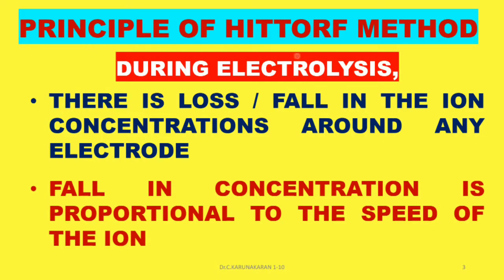We will now study the principle of the Hittorf method. During electrolysis, there is a loss or fall in the cationic or anionic concentration around any electrode. This fall in concentration is directly proportional to the speed of the ion.